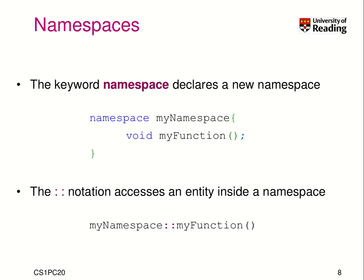So how do we declare such a namespace and how is it declared in the header files? It's declared using the keyword 'namespace'. So to create a namespace like my_namespace, I just write 'namespace my_namespace', then open a block, and everything inside this block is part of this namespace. To access an entity inside a namespace, I have to use the colon-colon notation. So 'my_namespace::my_function' means my_function in this namespace my_namespace.